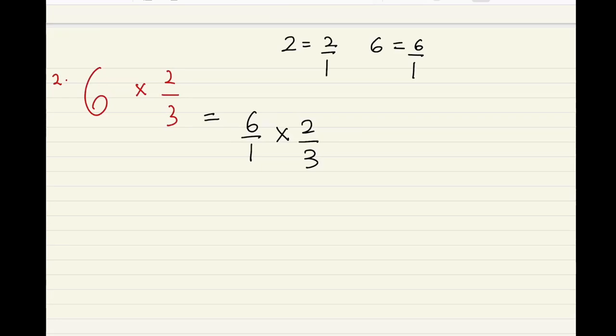Sometimes you can use the canceling out method where you cancel and reduce the terms diagonally. When you're canceling out, you can't cancel across—you have to cancel diagonally. We're gonna cancel out to reduce the terms, so we're gonna do 6 and 3. 3 goes into itself once and goes into 6 twice.